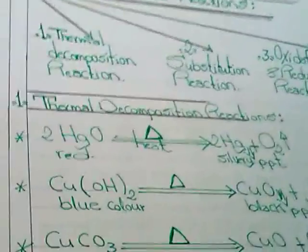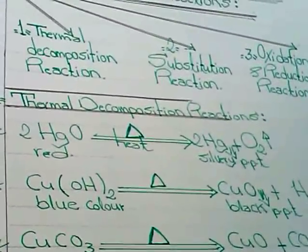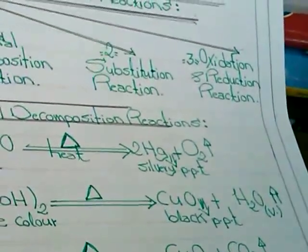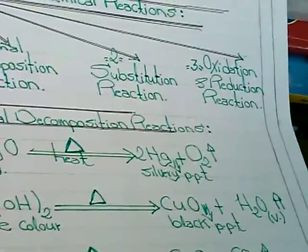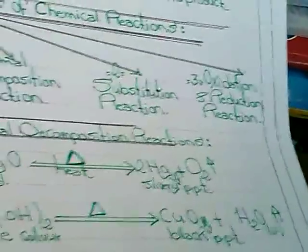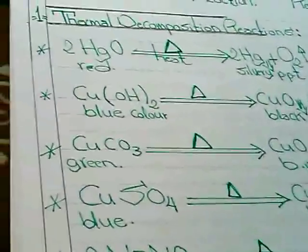The second equation: Copper hydroxide, which has a blue color, can be decomposed by heat to get black PPT of copper oxide, CuO, and water vapor evolves.